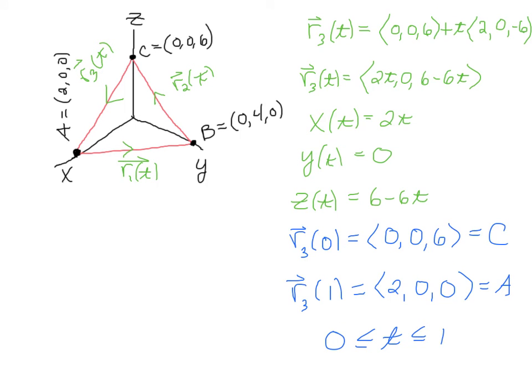We do the same thing for R₃, and it works the same way. The parametric equations will be X = 2t, Y = 0, Z = 6 - 6t. And then once again, if I plug in t = 0, R₃(0) is ⟨0, 0, 6⟩ which is the starting point C, and then R₃(1) will be ⟨2, 0, 0⟩, and that gets me to the final point A. And once again, we say that t is between 0 and 1, and now we've just taken a trip around this triangle from A to B to C back to A again. All right, good luck.